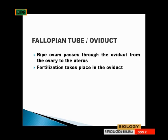Fertilization takes place in the oviduct — that is very critical. You should note that in the fallopian tube or oviduct, fertilization takes place because that is where the ripe ovum stays.